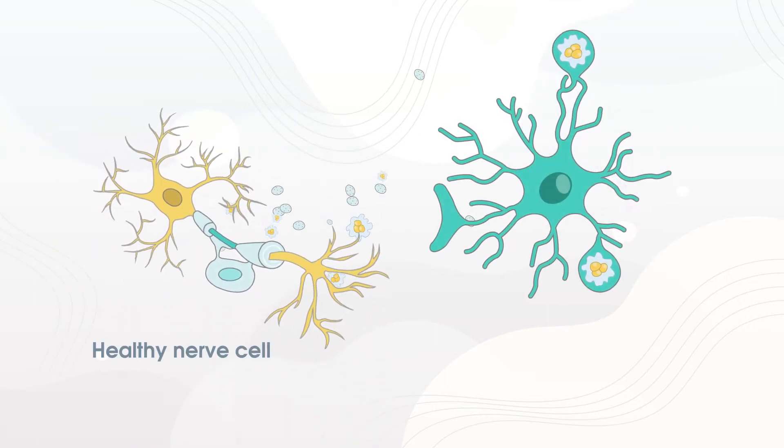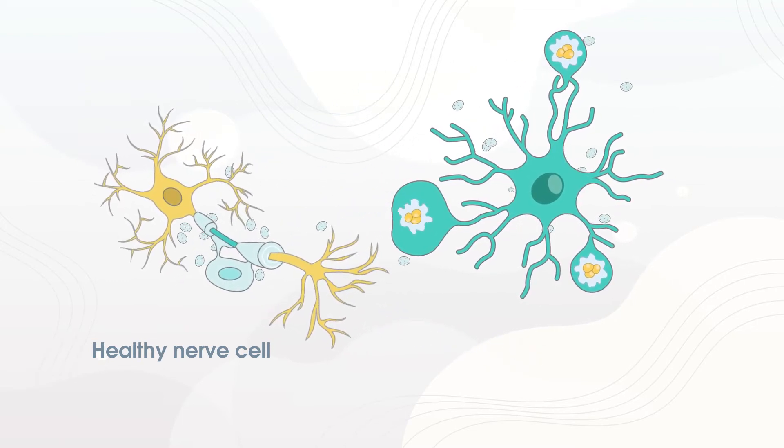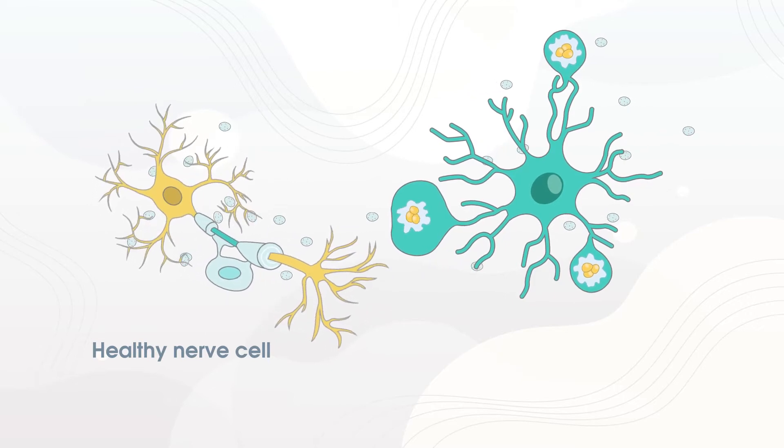Microglia are a cell type in the brain and spinal cord that normally have positive functions, such as clearing debris and assisting repair after injury.